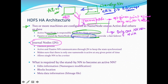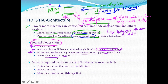The active name node writes into the majority of journal nodes. Whenever there is a change in the journal node, the standby name node reads the edits file and keeps itself synced. Once the active name node goes down, the standby name node reads all the information and promotes itself to active. Journal nodes and the active and passive name nodes communicate through this to keep state synchronized, and they allow only one name node to write onto them at any given point of time.